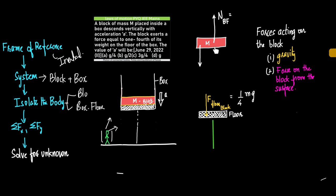So here, the floor is experiencing a force due to the block, which means the floor gives a reaction to the block. If I consider the free body diagram of the block of mass M, it receives a normal reaction on the block due to the floor. The normal reaction on the block due to the floor is equal to the force acting on the floor due to the block, which is given as one-fourth of the weight of the block — that is mg/4.